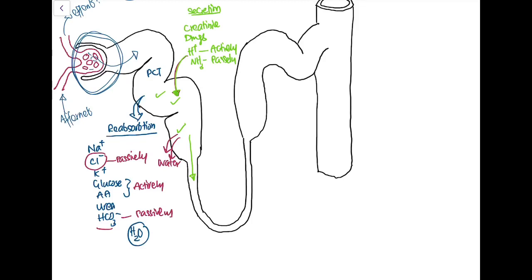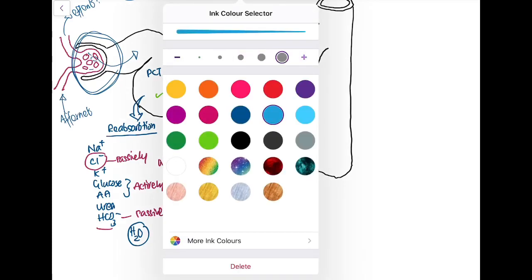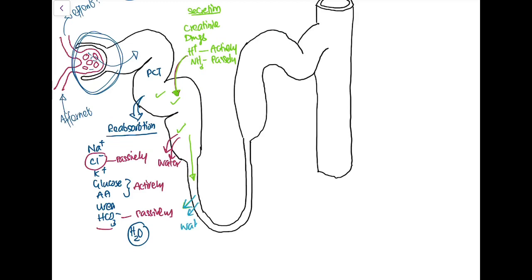At the descending limb of the loop of Henle, there is reabsorption of water, making the filtrate very concentrated. At the ascending limb of the loop of Henle, the membrane is impermeable to water, so water is not reabsorbed. However, sodium, potassium, and chloride are reabsorbed here. As a result, the filtrate entering the distal convoluted tubule is more diluted than it was in the loop of Henle.